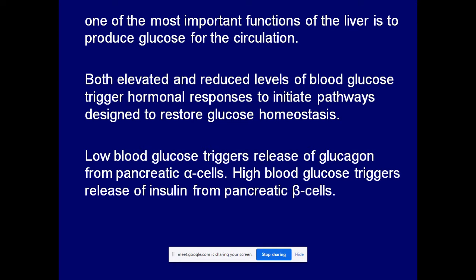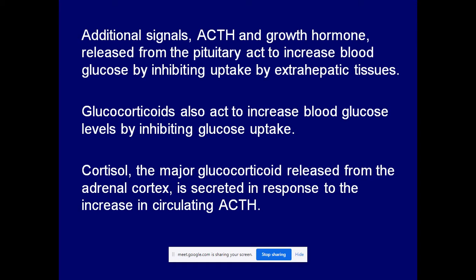High blood glucose concentration stimulates the production of insulin. This insulin hormone is produced by the pancreatic beta cells — the islets of Langerhans beta cells produce insulin. Both glucagon and insulin are produced by pancreatic cells, but by different cell types: alpha cells produce glucagon whereas beta cells produce insulin. These two hormones act antagonistically to each other.